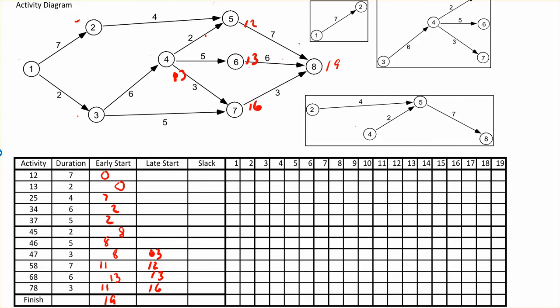Activity 4-6 can start as late as 13-5=8. Activity 4-5 can start as late as 12-2=10. Note that while the early start for all activities coming out of event 4 was the same (8), the late starts differ — 4-5 is 10, 4-6 is 8, 4-7 is 13. Activity 3-7: 16-5=11. Activity 3-4: the latest start is 8-6=2.